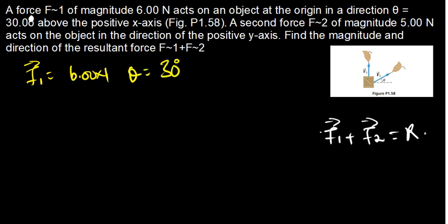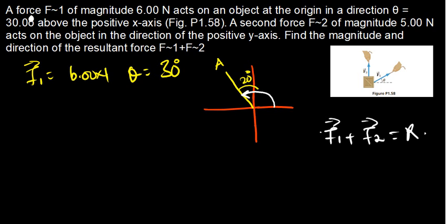They are saying 30 degrees above the positive x-axis, meaning that is the angle we are going to use. When dealing with vectors, the angles are supposed to come from the positive x-axis. For example, if this is the xy plane and you have a vector somewhere, and you have been given an angle like 20 degrees from the y-axis, then to resolve that vector into x and y components, you get the angle from the positive x-axis all the way to the vector — meaning 90 plus 20, which is 110 degrees.